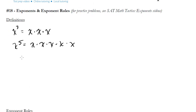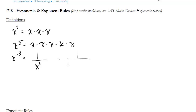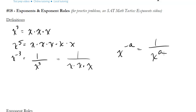How about something like a negative exponent, x to the negative three? You don't see this too much on the SAT, but occasionally. This is the same thing as one over x to the positive three. You just take this, put it on the bottom under a one, and make the exponent positive. This is the same thing as one over x times x times x. In general, the rule is if you have x to the negative a, it's the same thing as one over x to the a.